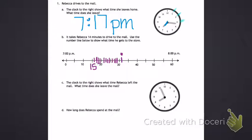Letter C. The clock to the right shows what time Rebecca left the mall. What time does she leave the mall? It's hard to tell in this picture, but that hour hand is still not quite to the 8. So our hour is still 7 o'clock.